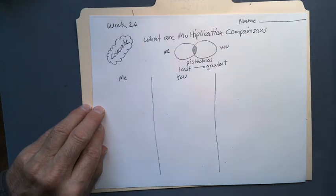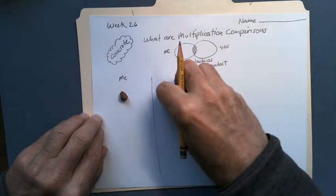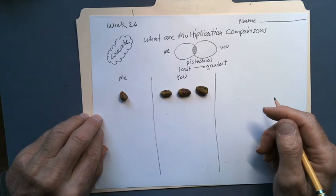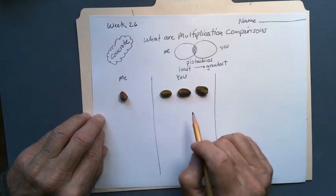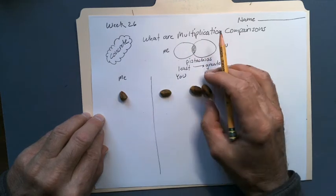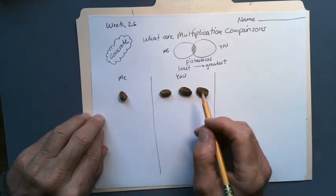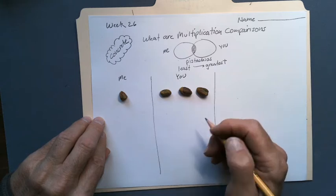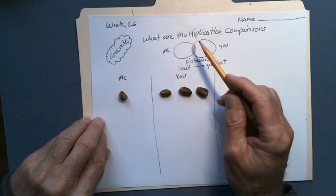In our first example, let's say I have one pistachio and you have three pistachios. Now in your previous grade levels, they would say how many more pistachios do you have than me, and you would say you have two more — you'd make an addition problem out of it. You'd say you have three and I have one, so you have two more. Or you could use subtraction and take this one from that three. But in multiplication comparisons, we're comparing these two like things — these two pistachios — using multiplication.